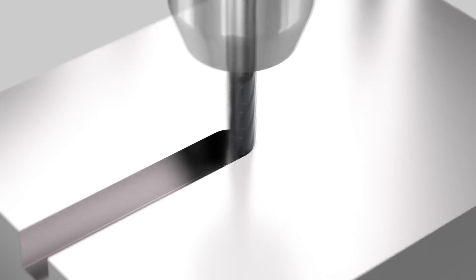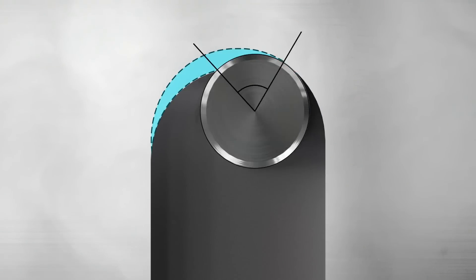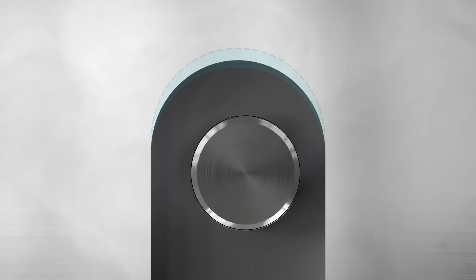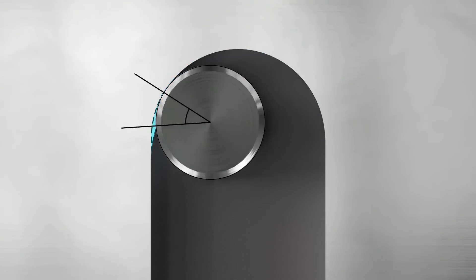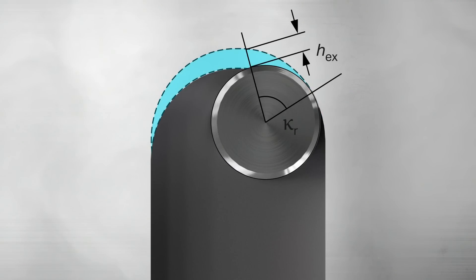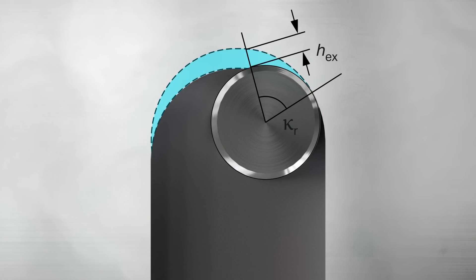When using the high feed side milling strategy it is important to keep the hex maximum chip thickness constant during the entire cutting process. With this strategy the radial engagement is low and the tool is programmed with a continuous spiral path controlling the arc of engagement.